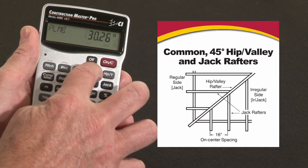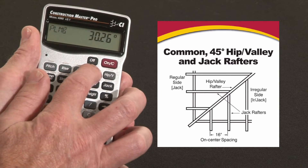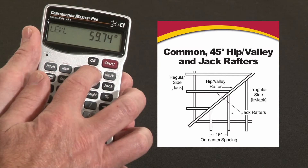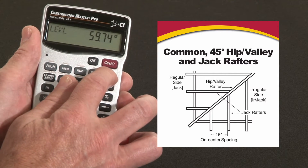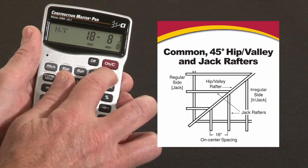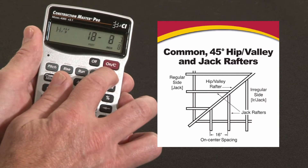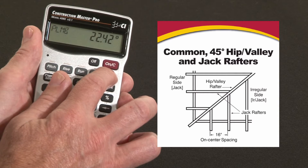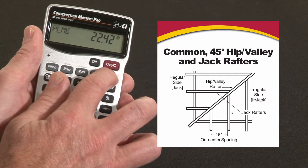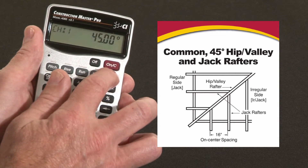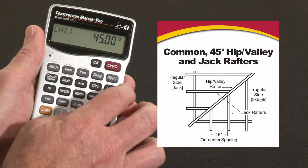If I press that again, it'll give me the common rafter length, the plumb cut angle, and the level cut angle. Now if there's a 45 degree hip or valley coming off of here, I can press that — that would be 18 foot 8 and 7 eighths. It'll give me the cut angles for the hip or valley rafter as well. The cheek cut's going to be 45 degrees since this is a regular hip or valley.